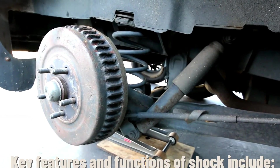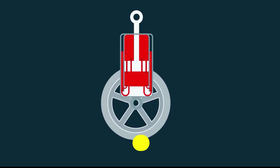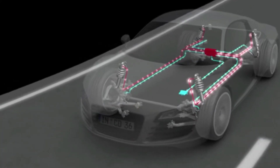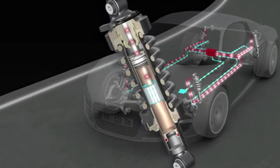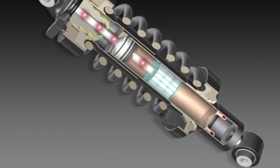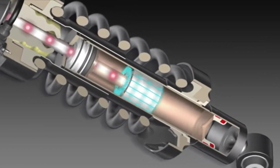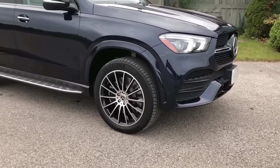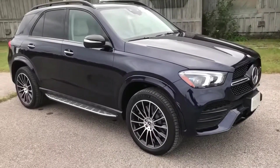Key features and functions of shocks include dampening. Shocks dampen the oscillations of the suspension springs by converting the kinetic energy generated during compression and rebound into heat. This process helps stabilize the vehicle's motion and prevents excessive bouncing.